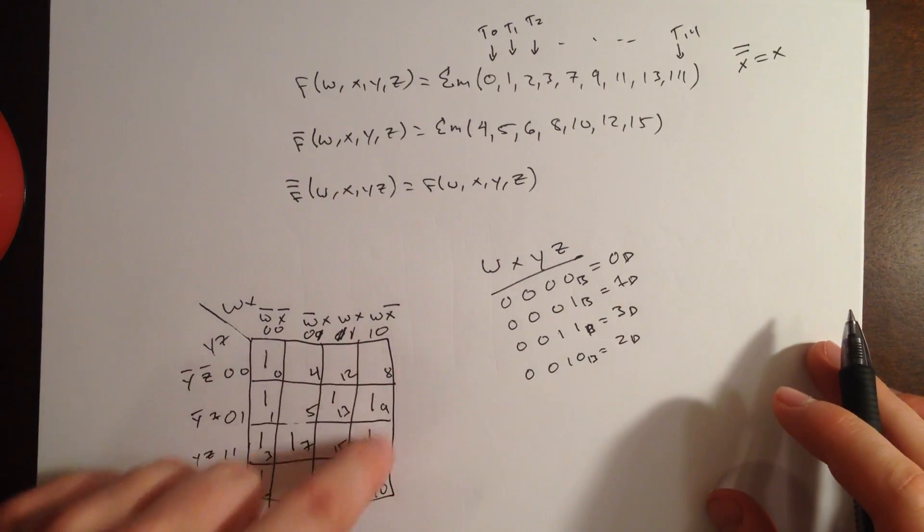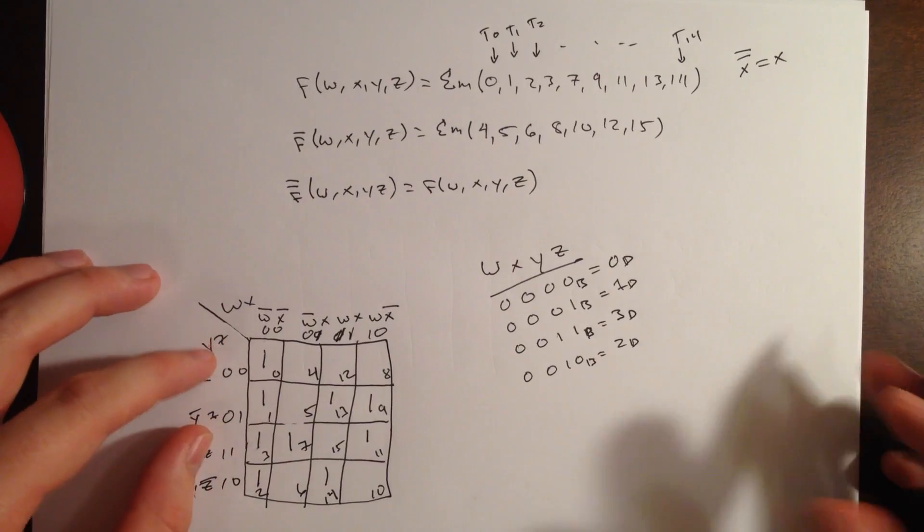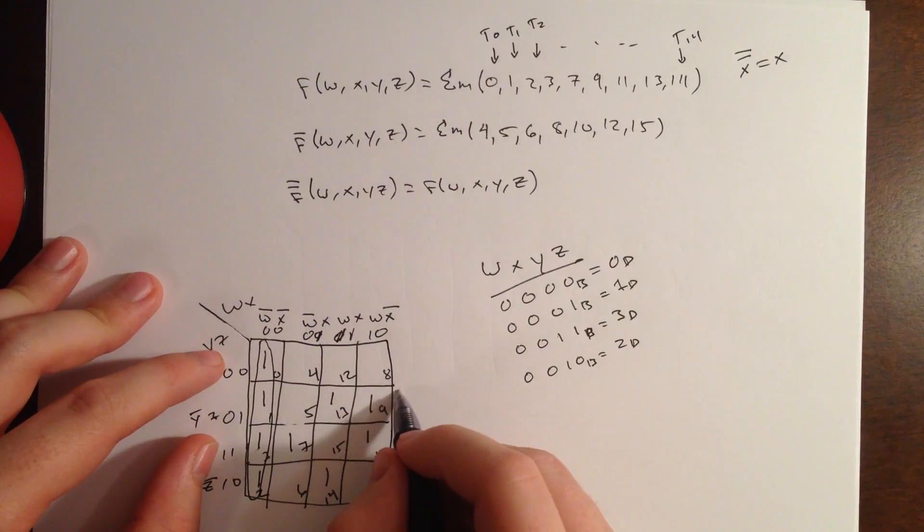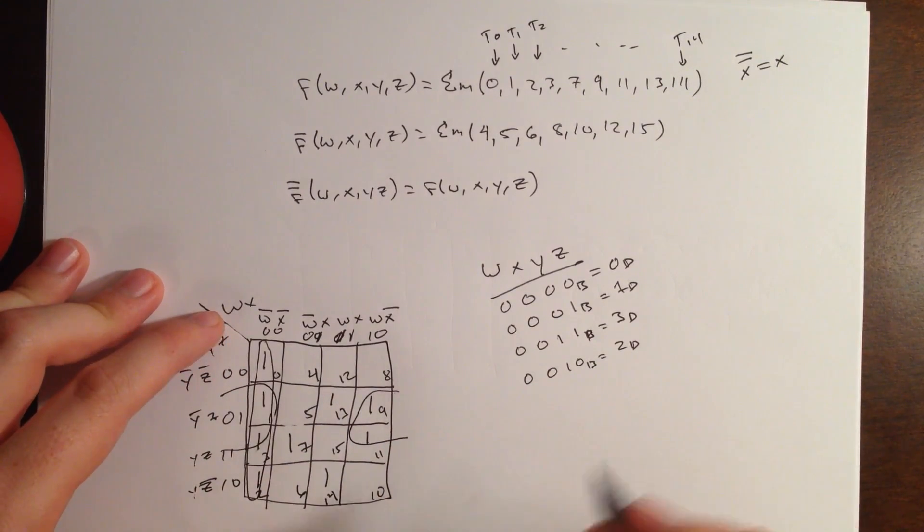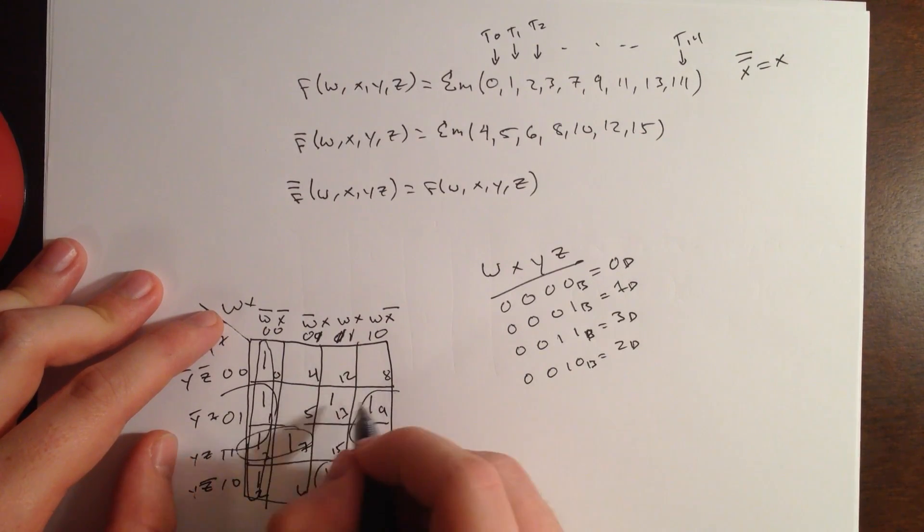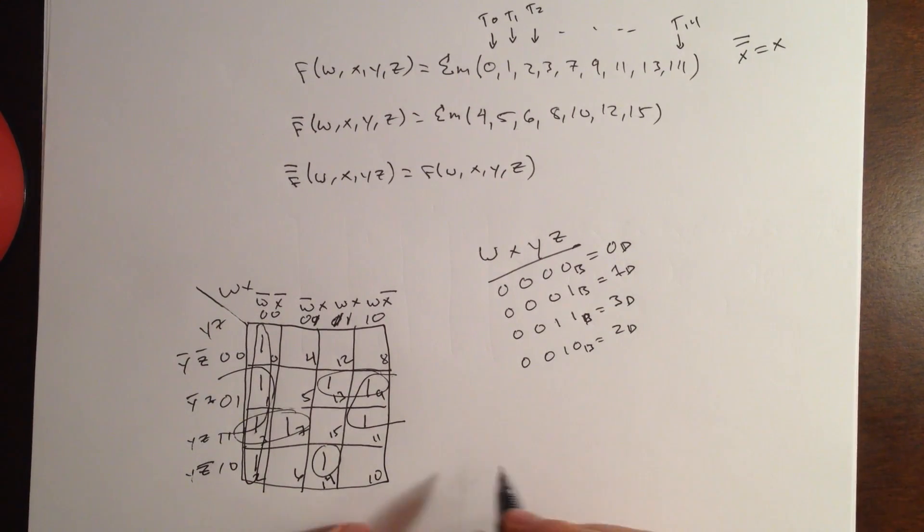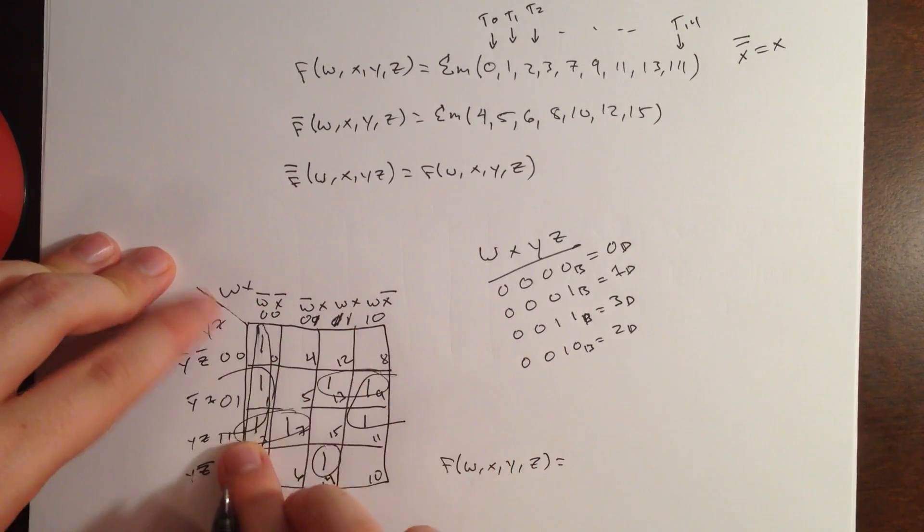So, the rest of these are just going to be zeros. So, we're going to find the minimum SOP expression for this kmap. Well, it looks like we can circle these four, and we can circle these four. This poor guy is just hanging out here by himself. Those two can be circled, and those two can be circled. So, now, let's go ahead and find the expression.